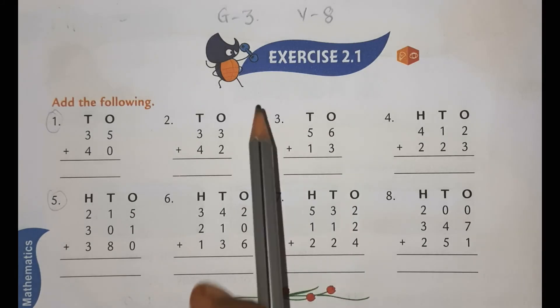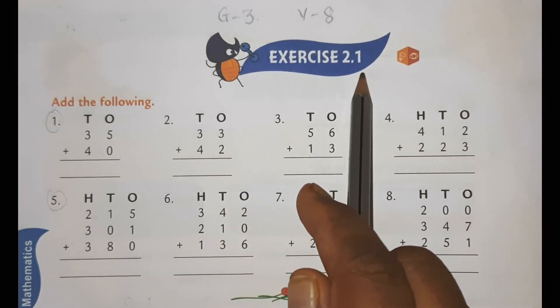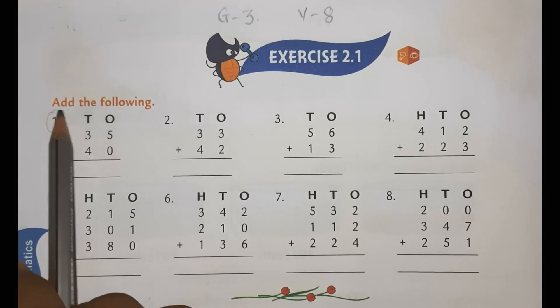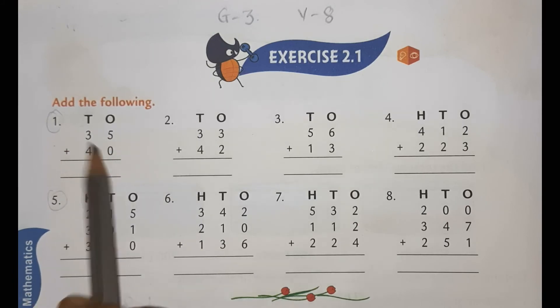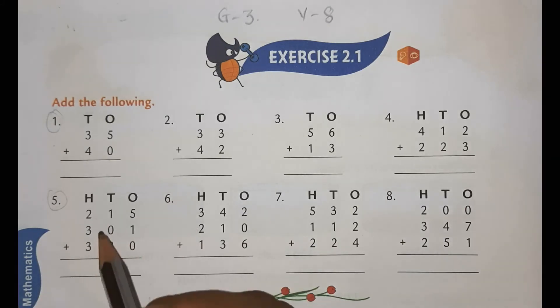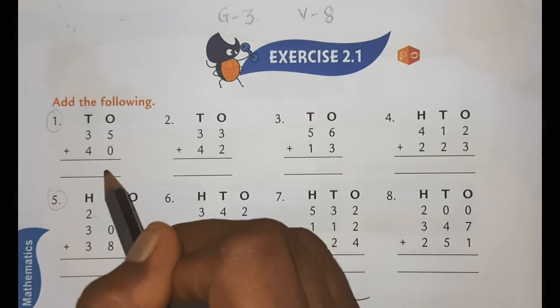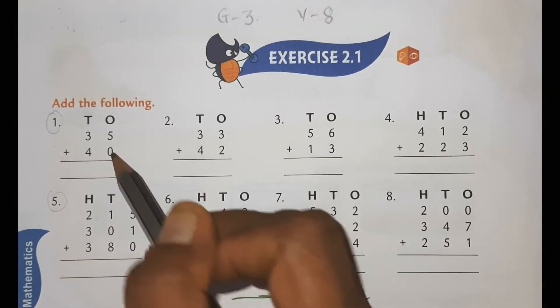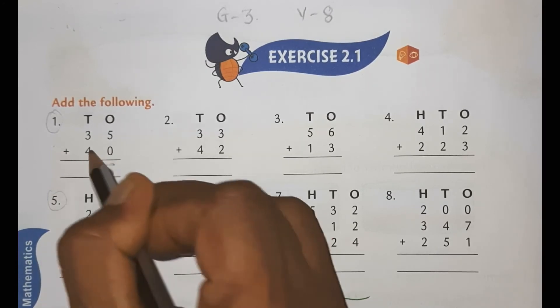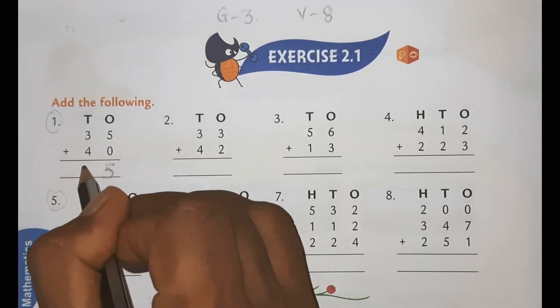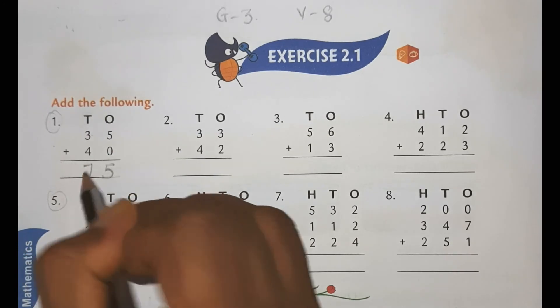So, children, this is your exercise 2.1. Add the following. Question number 1. 35 plus 40. So, how we will do this? You are all experts. You know how to do. So, let's do 5 plus 0. We will write here 5. 4 plus 3, 7.